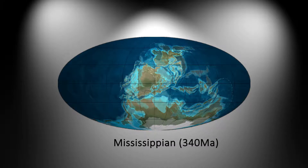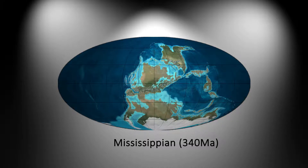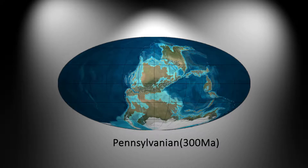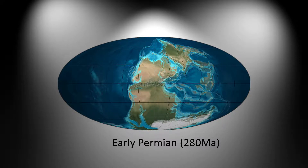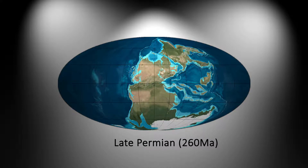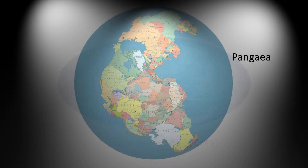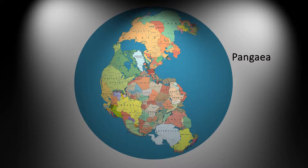Pennsylvanian, 370 million years ago. Early Permian, 280 million years ago. Late Permian, 260 million years ago. Between the Permian and the Triassic era, there exists a supercontinent named Pangaea, which is all of our current continents combined into one.